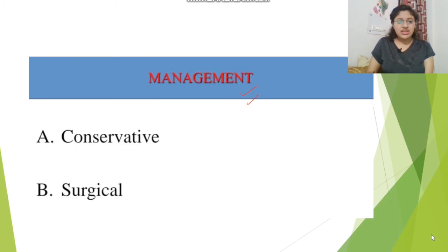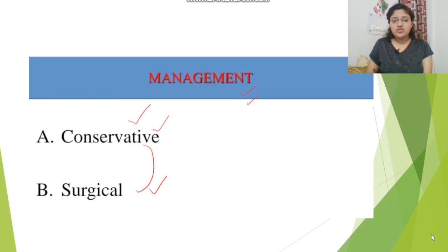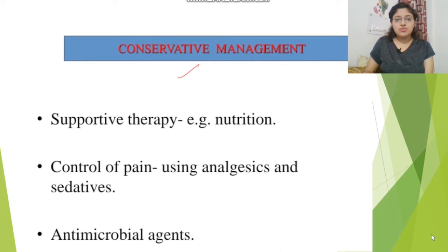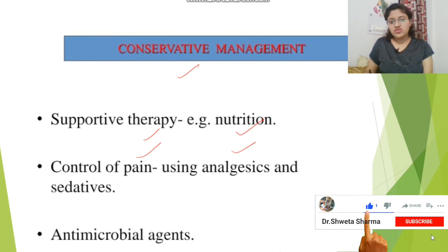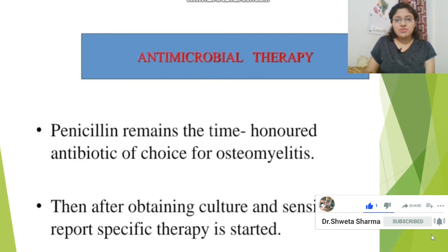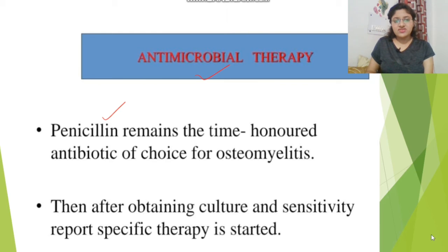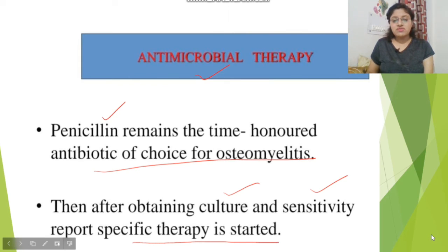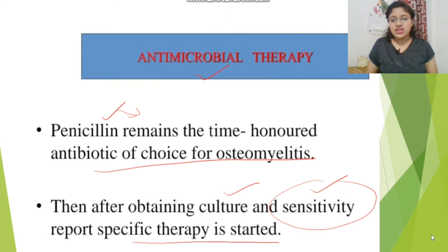Management can be conservative or surgical. If conservative works, good; if not, we proceed to surgical. Conservative therapy includes: maintaining nutrition balance, controlling pain with analgesics and sedatives, and antimicrobial agents — antibiotics. Penicillin is the drug of choice in osteomyelitis. After obtaining culture and sensitivity reports, specific therapy is given — such as vancomycin.